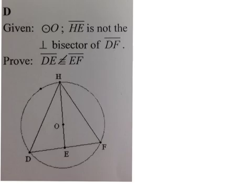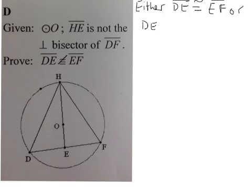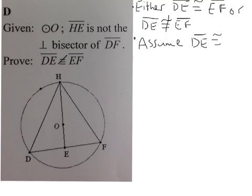So, it's problem D. From your little sheet. So, this is a proof by contradiction. So, we always start these out by saying our two options of our proof. So, either DE is congruent to EF or DE is not congruent to EF. And, then we assume that DE is congruent to EF.